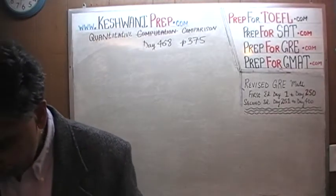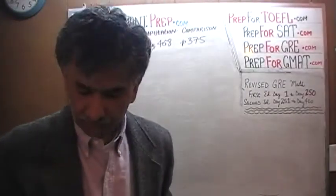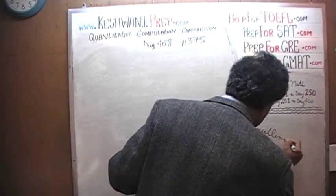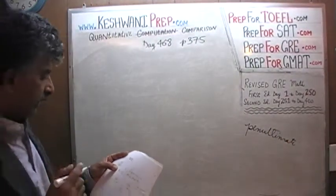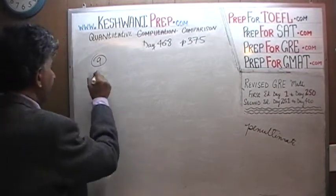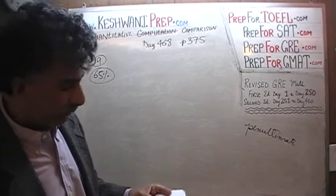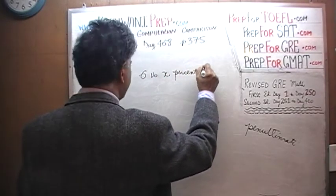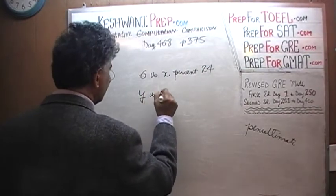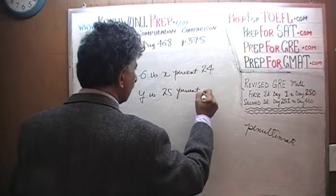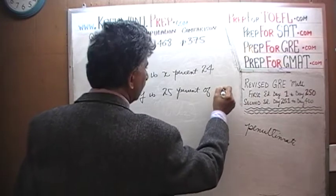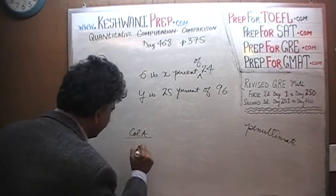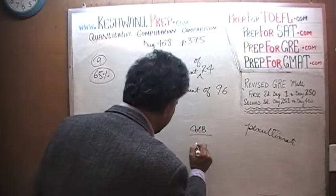Let's take a look at page number 375, problem number 9 — the penultimate problem on the page. When it appeared on the exam, 65% of the people had no trouble with it and 35% missed it. Here is what we are being told: 6 is x% of 24, and y is 25% of 96. What we are being asked to compare is column A — x — versus column B — y.